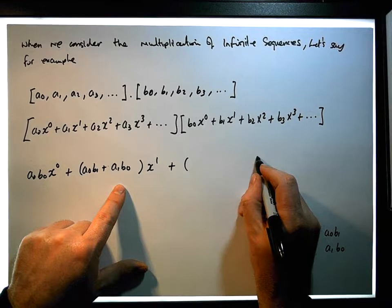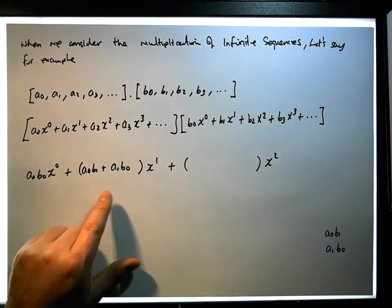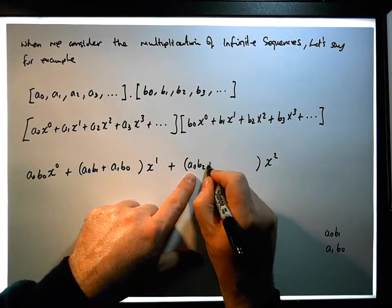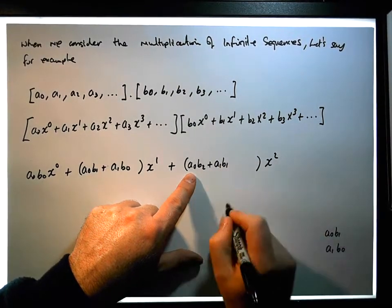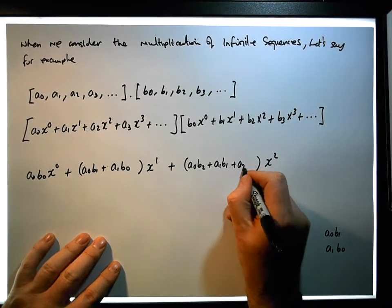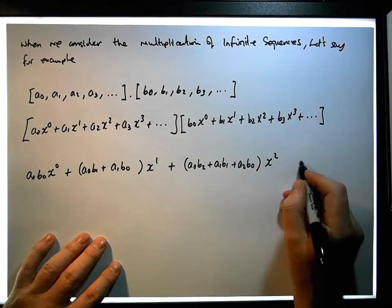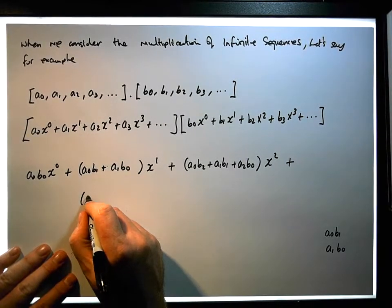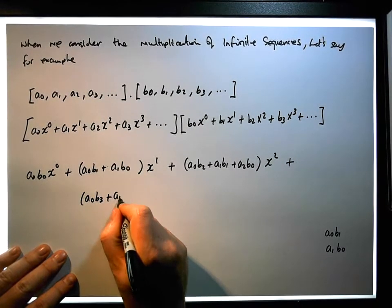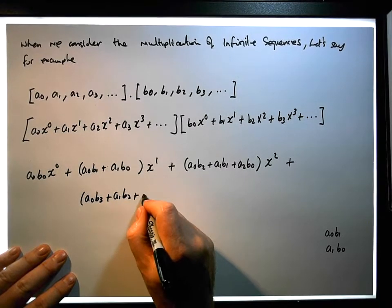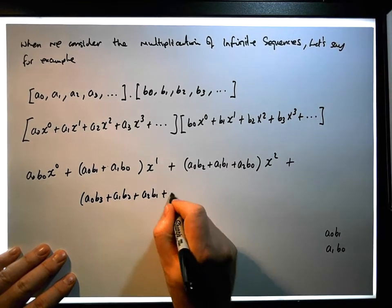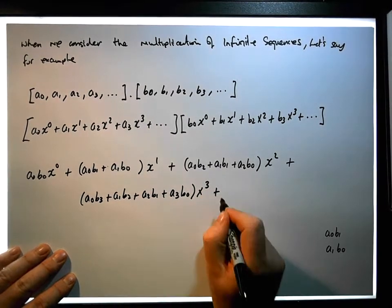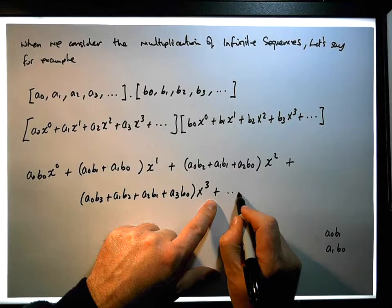In relation to the x^2 term, we're going to have three terms. We could have a0·b2 plus a1·b1 — because the indices have to add to give us 2 — plus a2·b0. In relation to the x^3 term, it's going to be a0·b3 plus a1·b2 plus a2·b1 plus a3·b0. That would be our x^3 term, plus and so on and so forth.